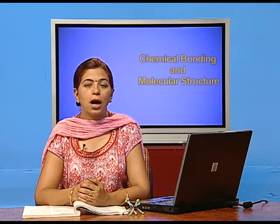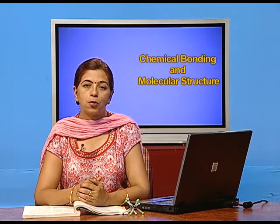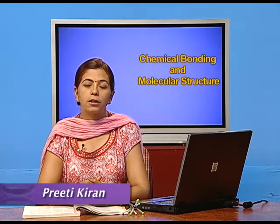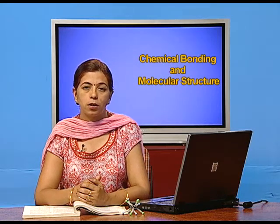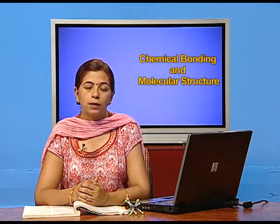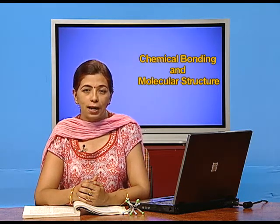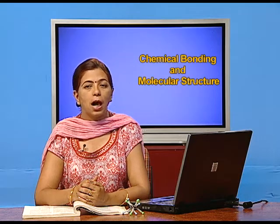Dear students, in this chapter Chemical Bonding and Molecular Structure, we will study about the various types of bonding and the shapes of molecular structures. Before starting the bonding and the Lewis dot structure, matter is made up of one or different types of elements, and elements are made up of atoms and molecules. But atoms are incapable of independent existence except the noble gases; all other elements exist in the molecular state.